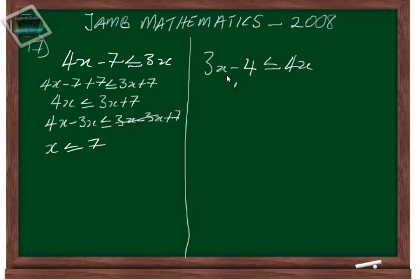On the other side, for the other inequality, we will subtract 3x from this inequality to bring all the x's to one side. So we have minus 4 is less than or equal to 4x minus 3x. Minus 4 is less than or equal to x.